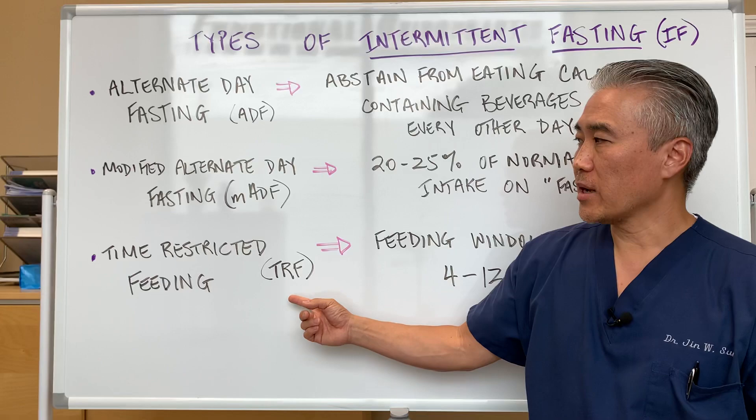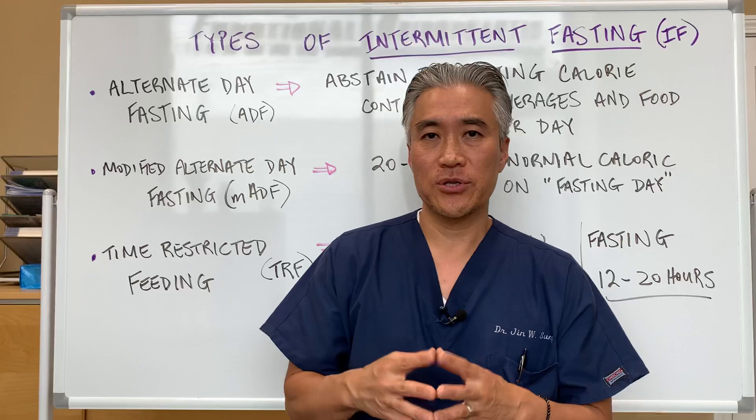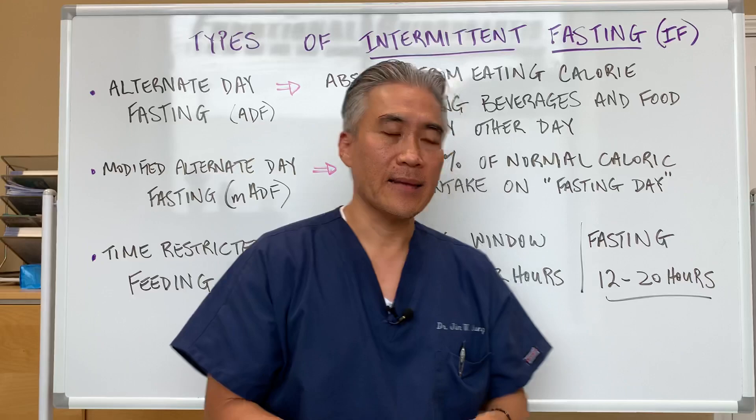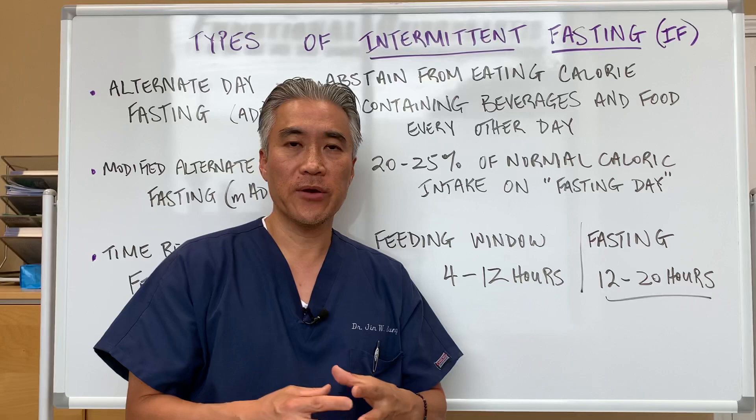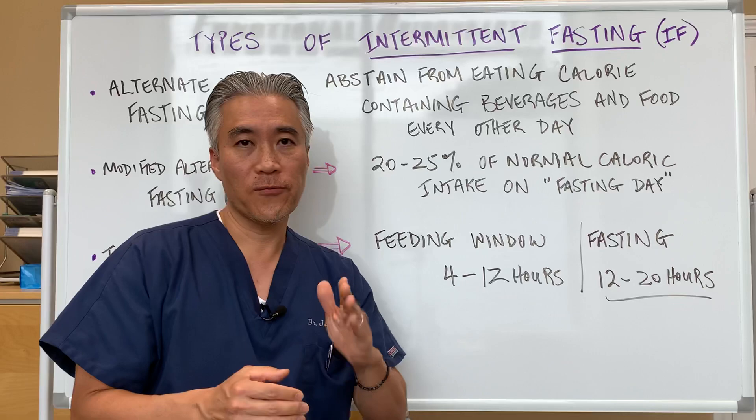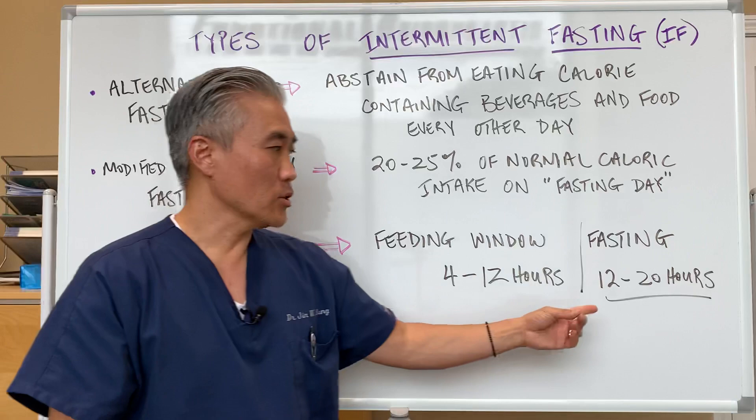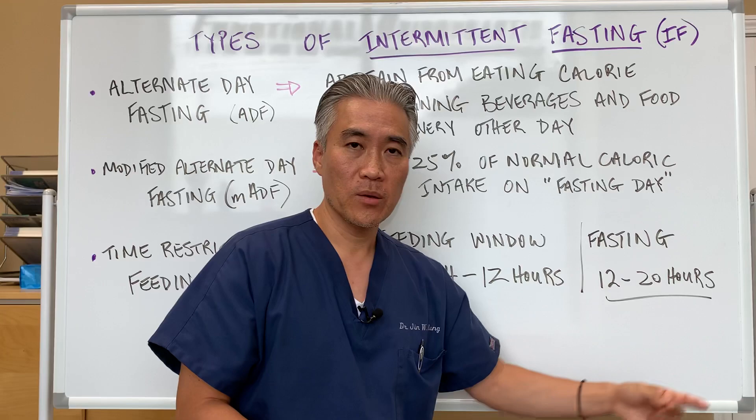You have a time-restricted feeding window. This is when you eat for a certain time frame during the day, and then you fast the rest of the day. That window can be anywhere from 4 to 12 hours. So you can say, I'm only eating between noon and 4, or 4 and 8 p.m., and then you're going to fast the rest of the time — anywhere from 12 to 20 hours.